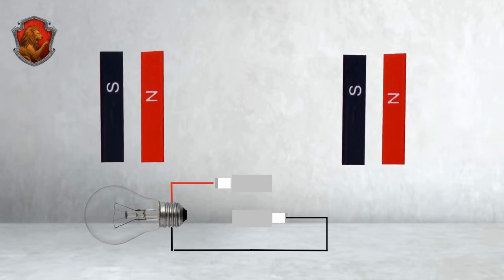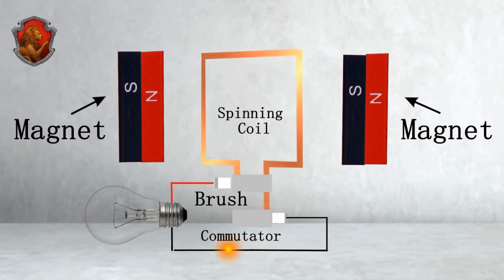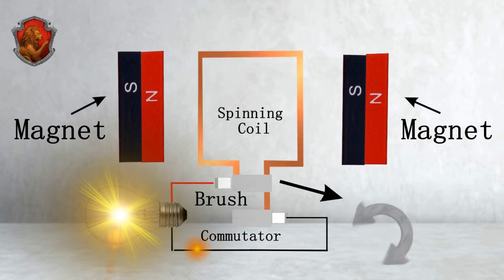The generator or dynamo is made up of stationary magnets called the stator, which create a powerful magnetic field, and a rotating magnet called the rotor, which distorts and cuts through the magnetic lines of flux of the stator. When the rotor cuts through the lines of magnetic flux, it makes electricity.